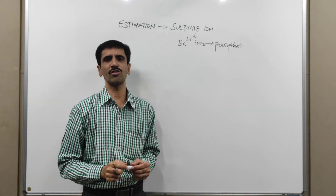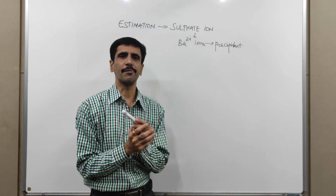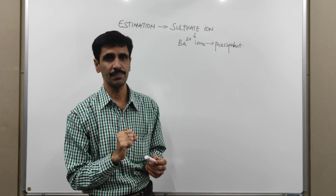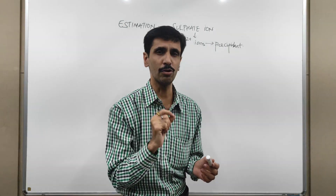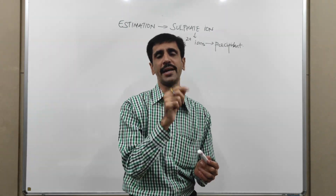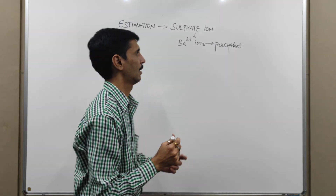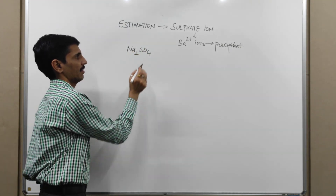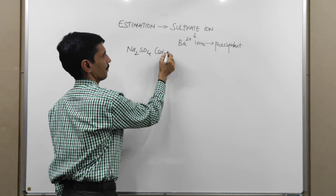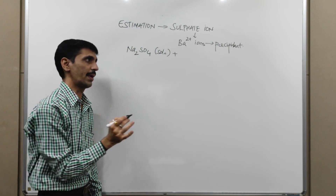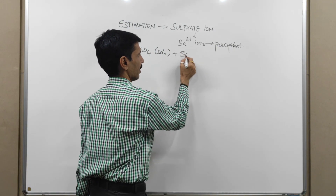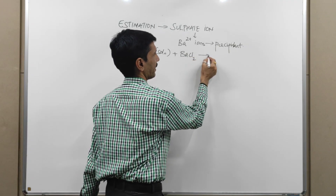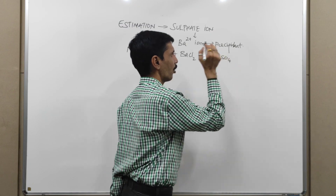The theoretical part behind this particular experiment is that we have a sulfate ion in the form of a solution. I will also tell you which sulfate I am going to take, and that is sodium sulfate, Na2SO4. This is in the form of a solution. Upon addition of barium ions — that is BaCl2 — it results in the formation of a precipitate of barium sulfate, BaSO4.